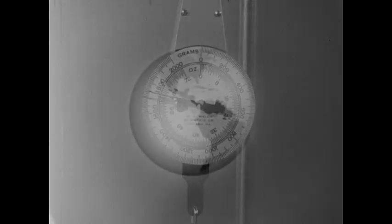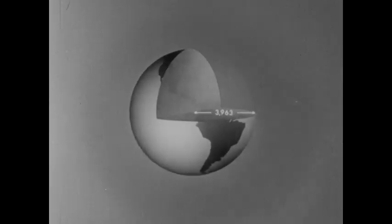And gravity, of course, depends upon the mass of the earth and the distance from its center. At the equator, this distance is greater than at the poles due to the earth's equatorial bulge. So, if an object at one of the poles weighs 100 grams, at the equator, the same object will weigh about 99 and a half grams.